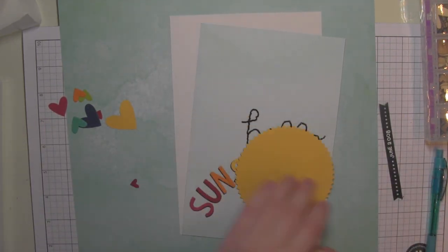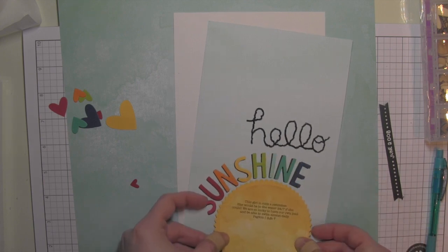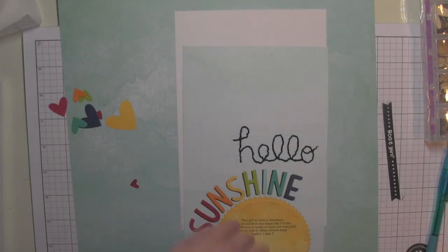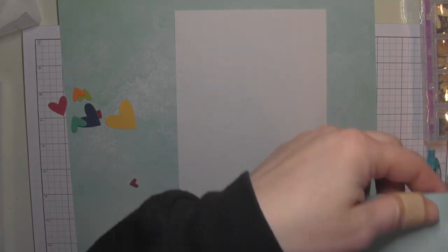While I did die cut all of those colorful letters for the word sunshine, I forgot to mention that I did die cut a bunch of hearts from those same colors of cardstock using the Lawn Fawn Hearts dies and I'll be adding those as elements to my page as well.